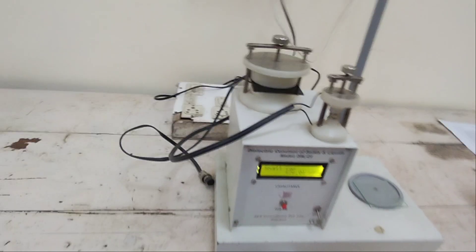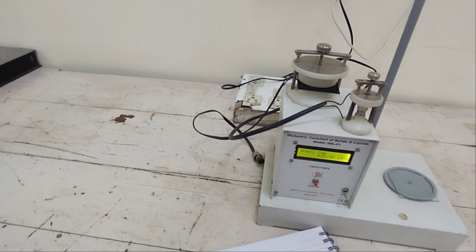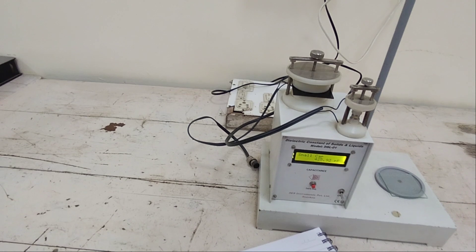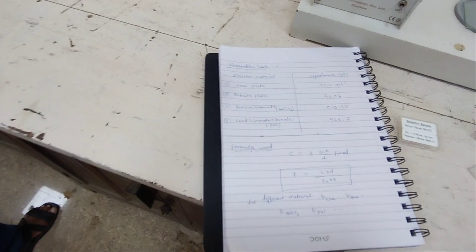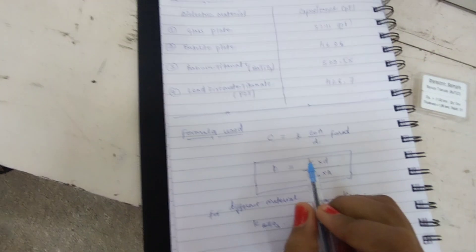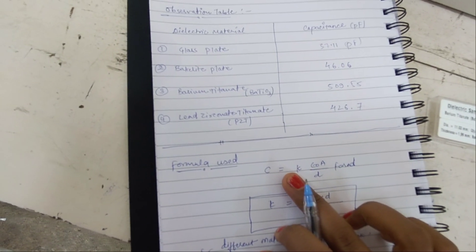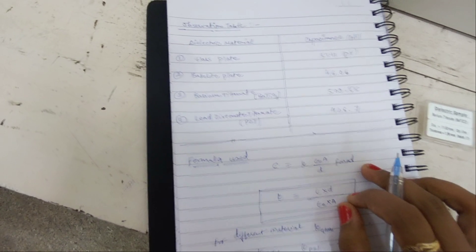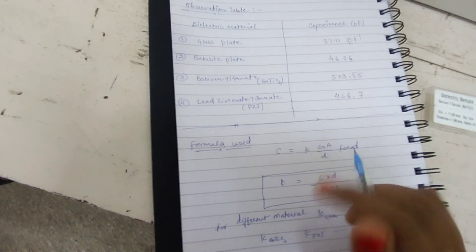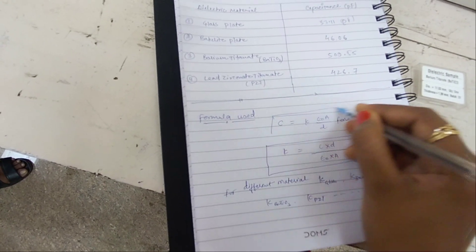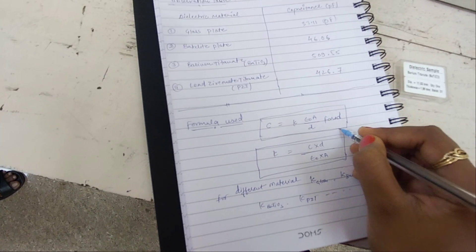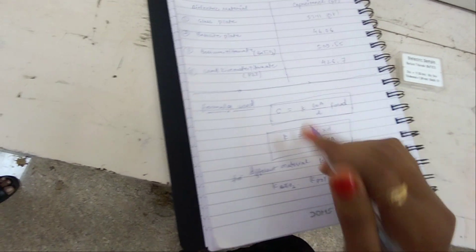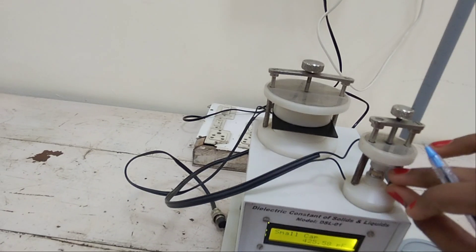Now next part which is for calculation. You have to do your calculation from the formula. You can see here C equals to κε₀A/d farad. This is the capacitance of parallel plate capacitor. You have to read it in class 12th, the parallel plate capacitor. You can see here also these are the parallel plates.